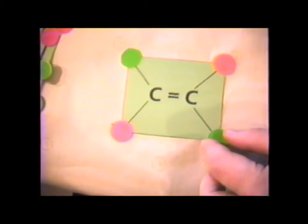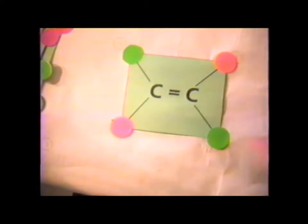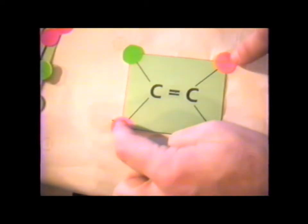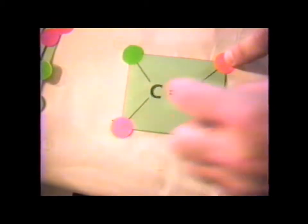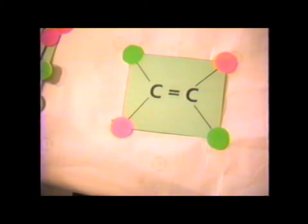An important class of substituted ethylenes would be the trans-substituents. They are trans because they are on opposite sides of the carbon-carbon double bond. So let's see what the point group symmetry of this one is. And this is a point group which is virtually guaranteed to stump students — one of the ones they have the most difficulty with.